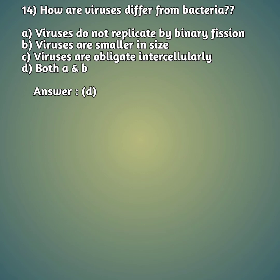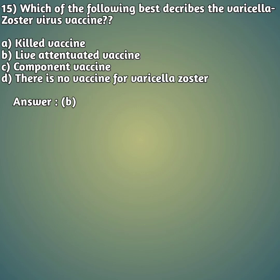Fifteenth question: which of the following best describes the varicella zoster virus vaccine? Option A: killed vaccine. Option B: live attenuated vaccine. Option C: component vaccine. Option D: there is no vaccine for varicella zoster. The right answer is B — varicella zoster is a live attenuated vaccine.